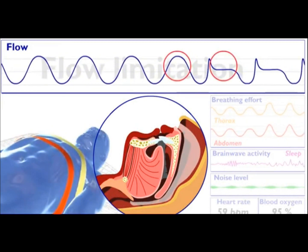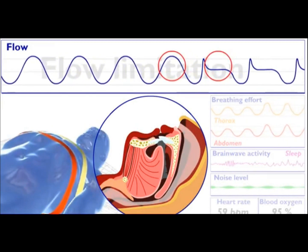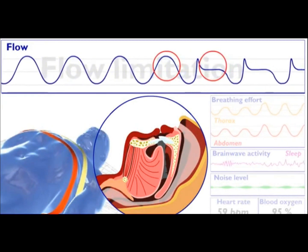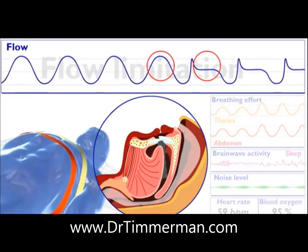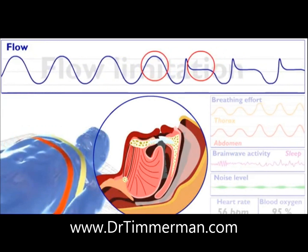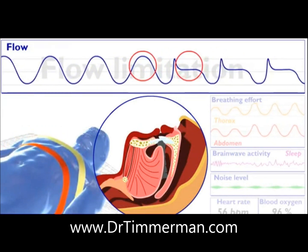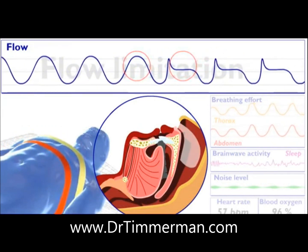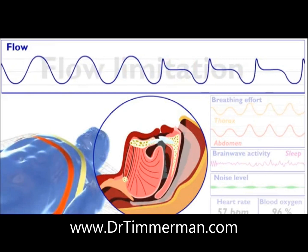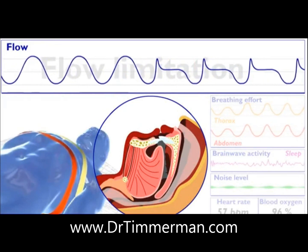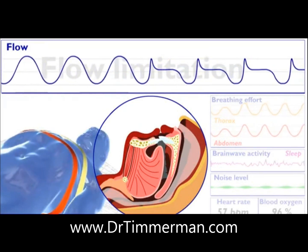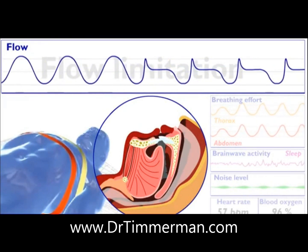The airflow curve now has a characteristic chair-like shape. The middle of the curve looks flatter than it does for normal breathing. The flow at this point is being limited by the restricted airway.